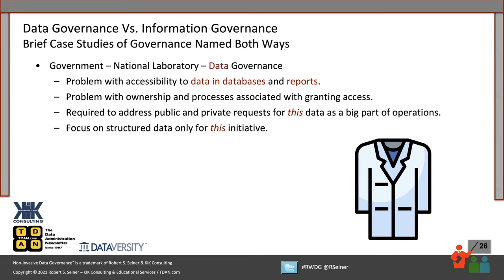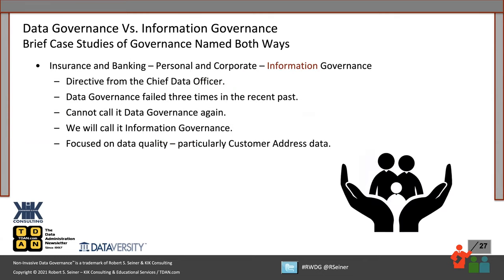Another organization — one of the U.S. national laboratories — focused on accessibility to data, focused on structured data, called it data governance from the beginning, and continues to call it data governance today. Another organization — one of our larger insurance companies here in the United States — when I came in, they called it information governance. That was a directive from the person at the top of data within the organization. When I asked why they were calling it information governance versus data governance, he said, because we've tried data governance three times and it's failed each time before, and we're not going to be able to call it data governance again.